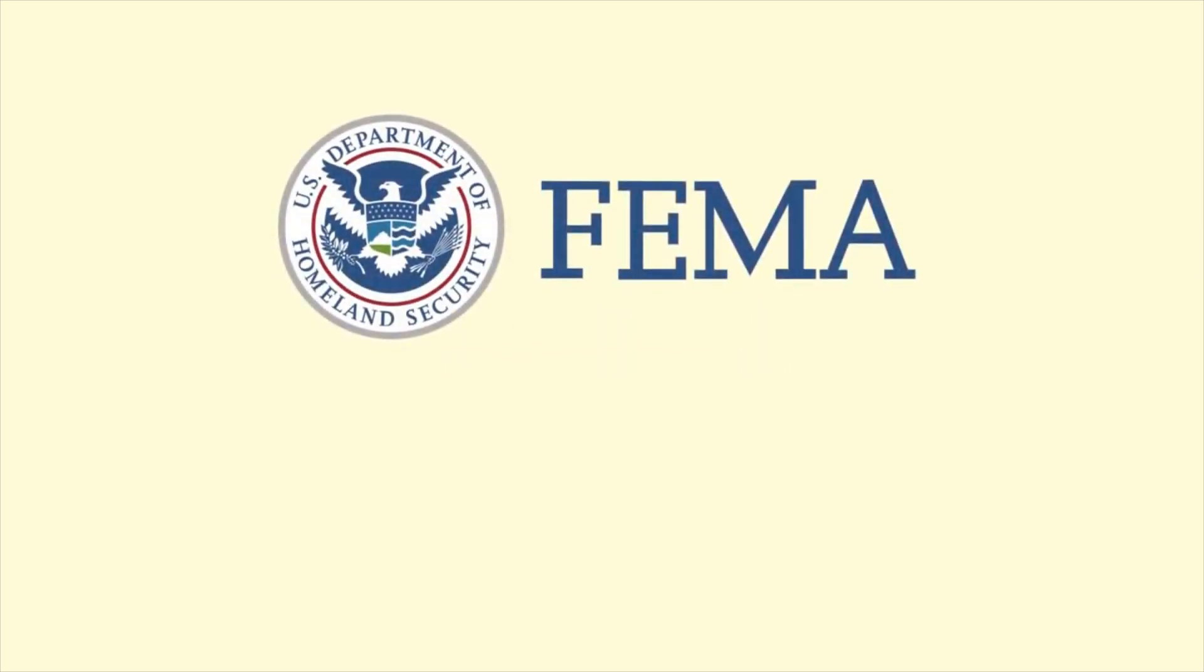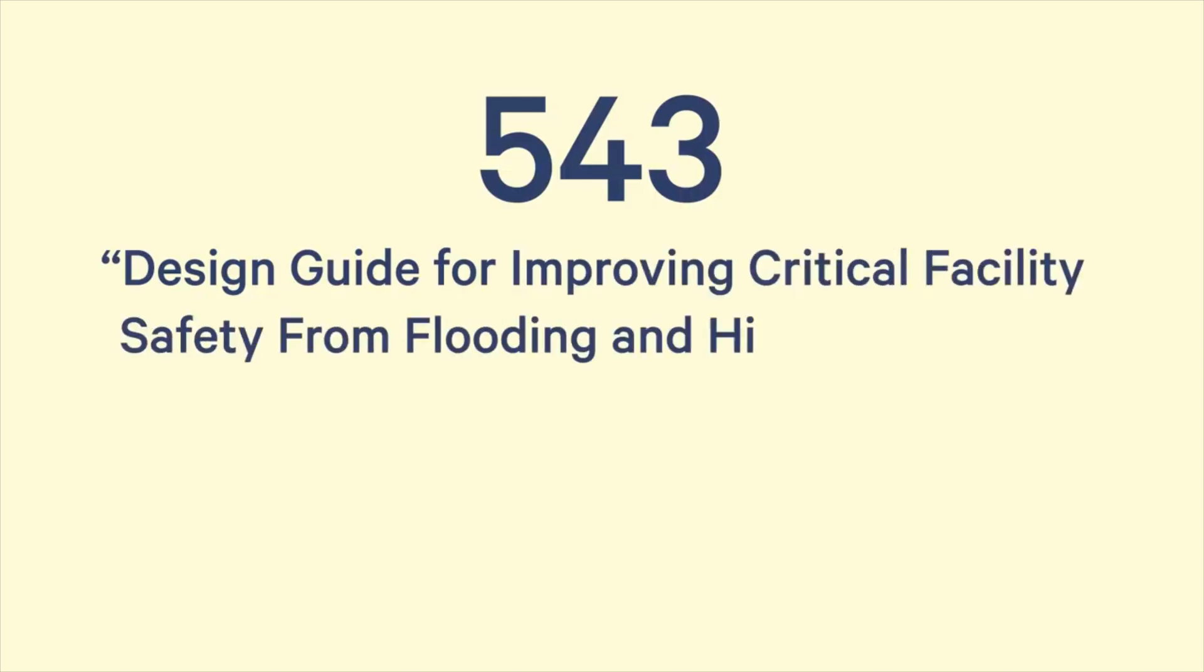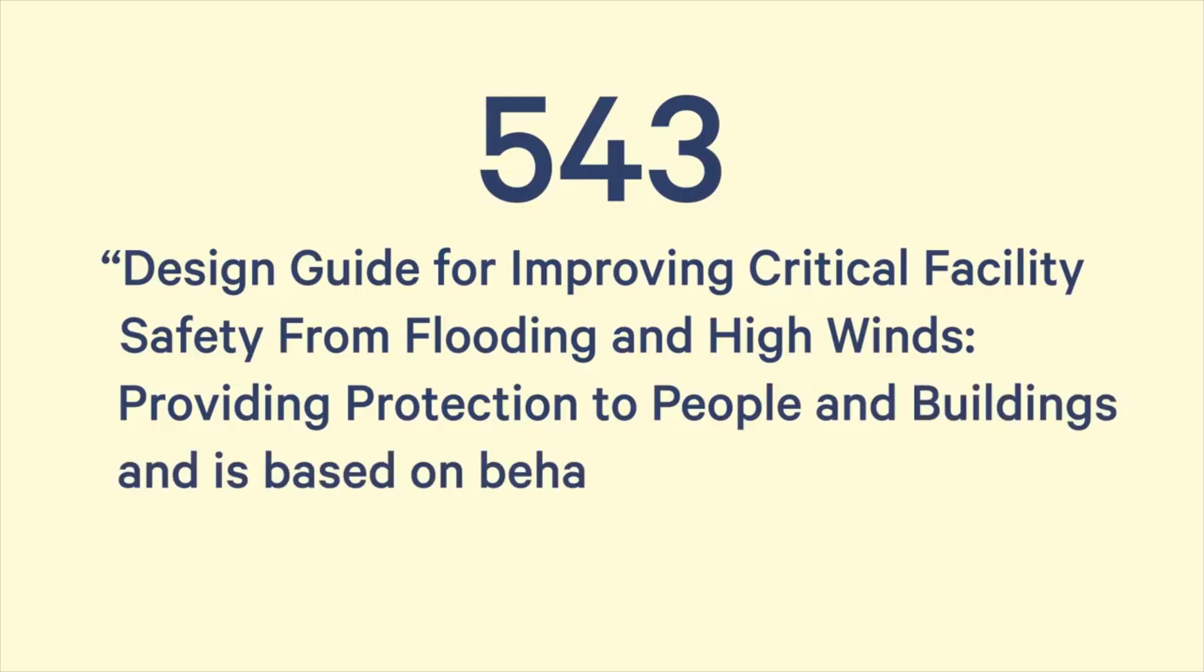The 2016 edition Annex A newly adds for further information referred to FEMA 543 and FEMA 577, both dated August 11, 2013. FEMA 543 is the design guide for improving critical facility safety from flooding and high winds, providing protection to people and buildings, and is based on behavior of critical facilities during Hurricane Katrina.